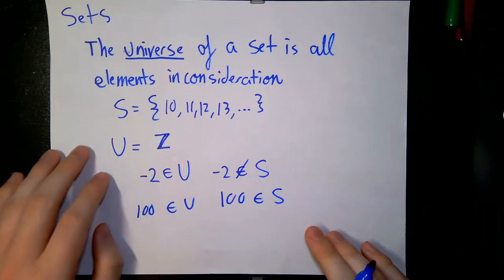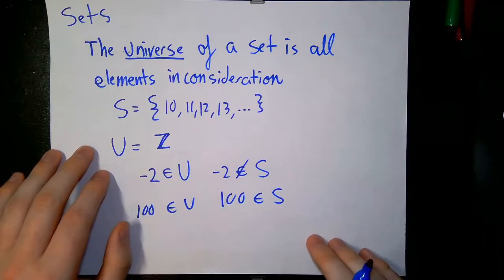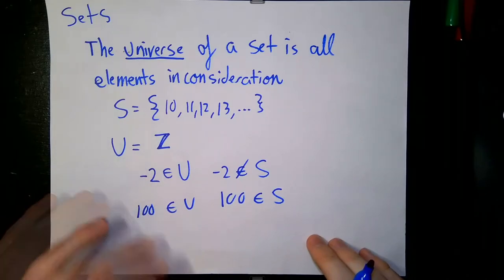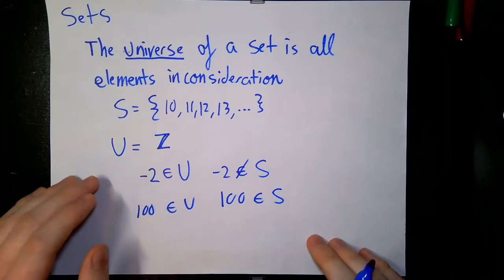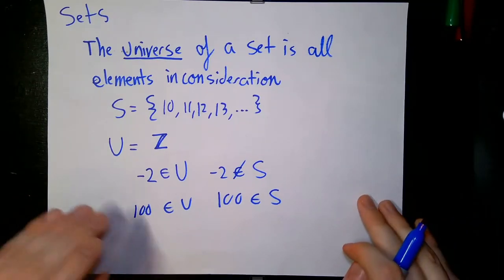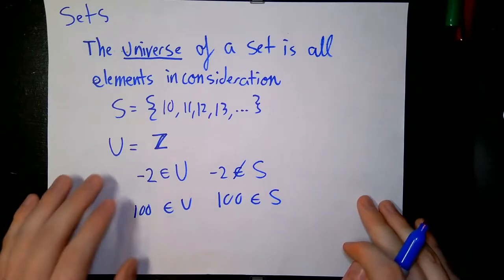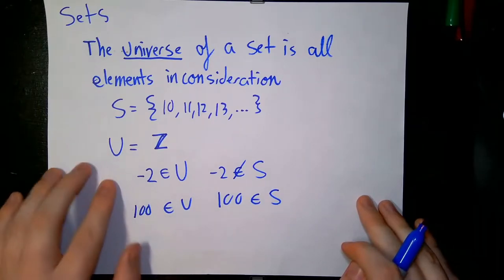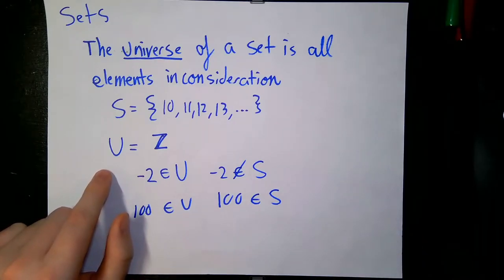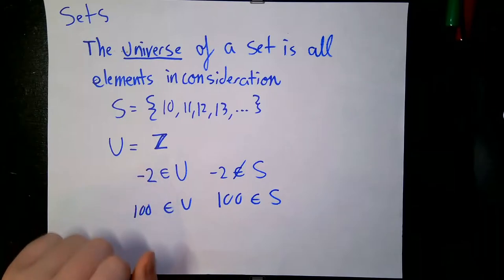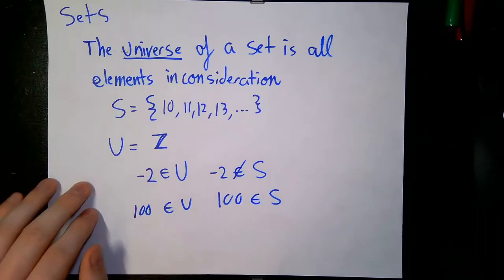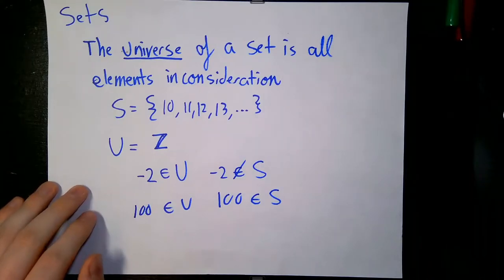The universe is a set itself and it does contain elements. We don't worry about elements outside the universe because the universe is our context — we don't even consider any elements outside of it. In this case, we wouldn't consider something like three-halves because we only care about the integers for this problem. Now that we have the definition of the universe down, we're going to use this along with our predicate logic to start talking about cooler ways of building sets.